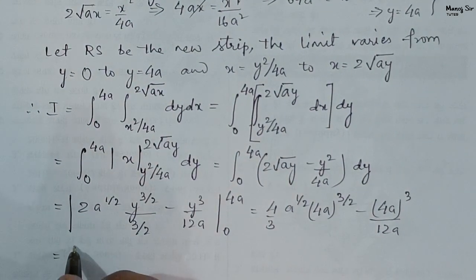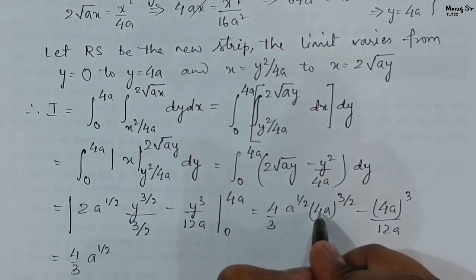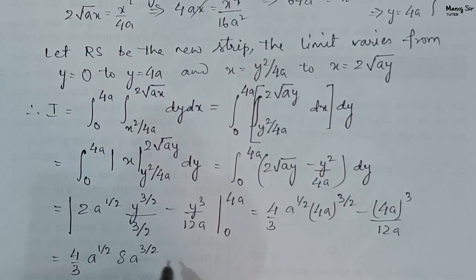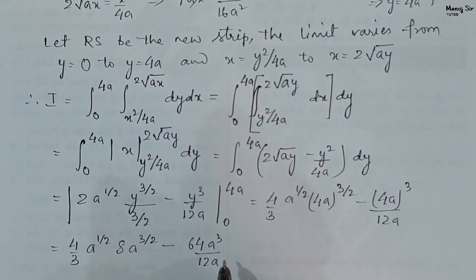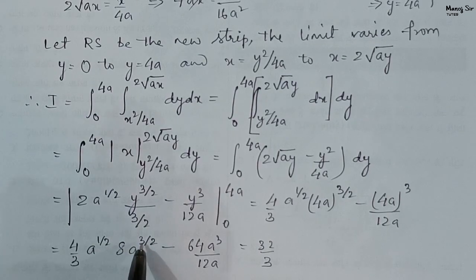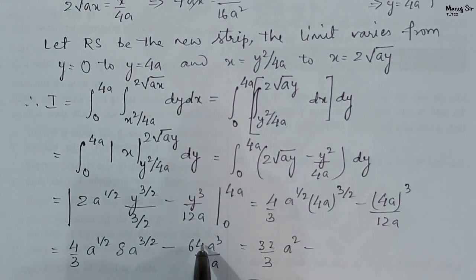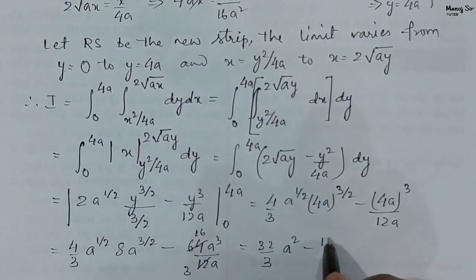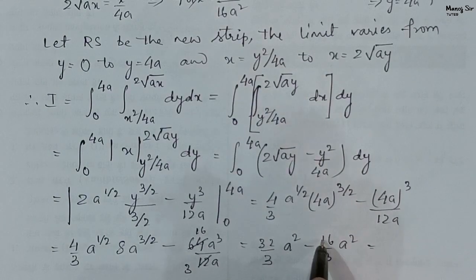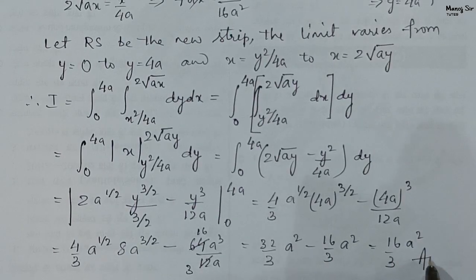Solving: (4a)^{3/2} = 8a^{3/2}, so the first term is (4/3)·a^{1/2}·8a^{3/2} = 32a² / 3. The second term: 64a³ / 12a = 16a² / 3. Therefore I = 32a² / 3 − 16a² / 3 = 16a² / 3. This is the final answer. I hope you learned a lot from this video. Thank you.